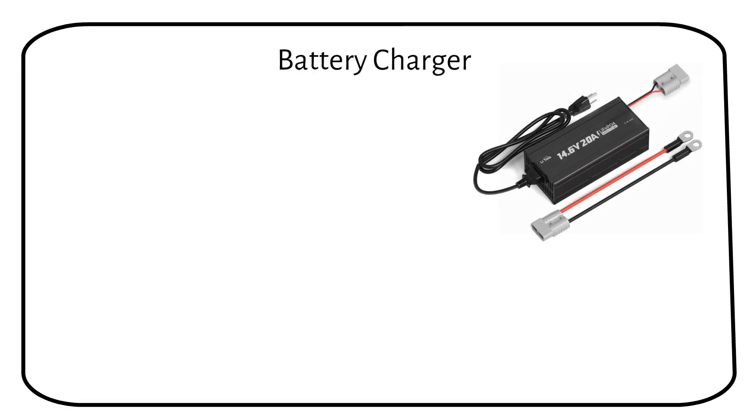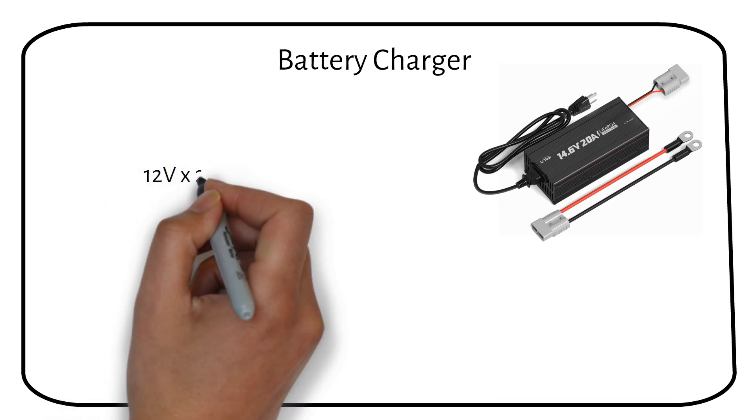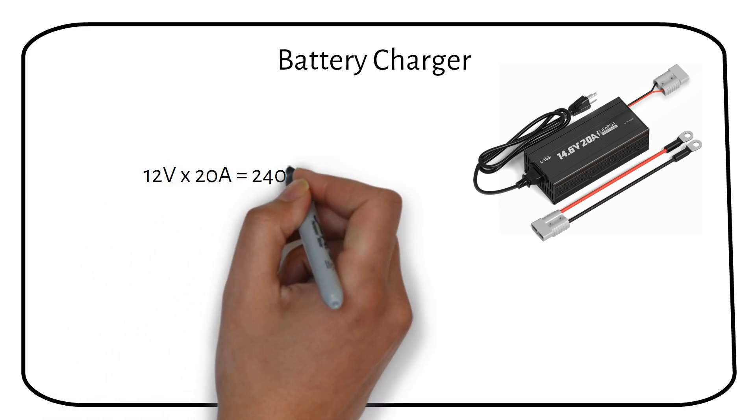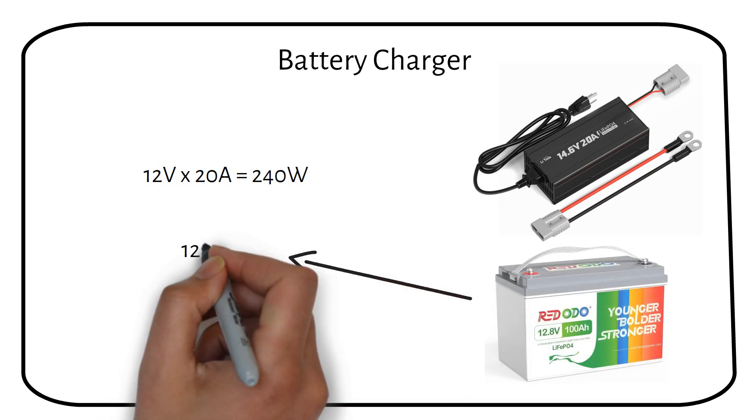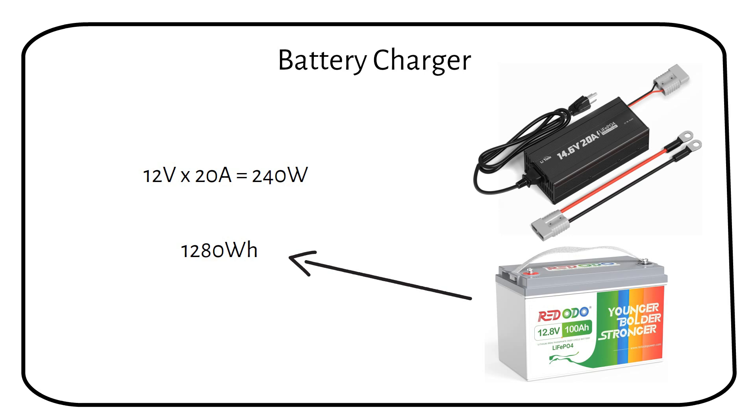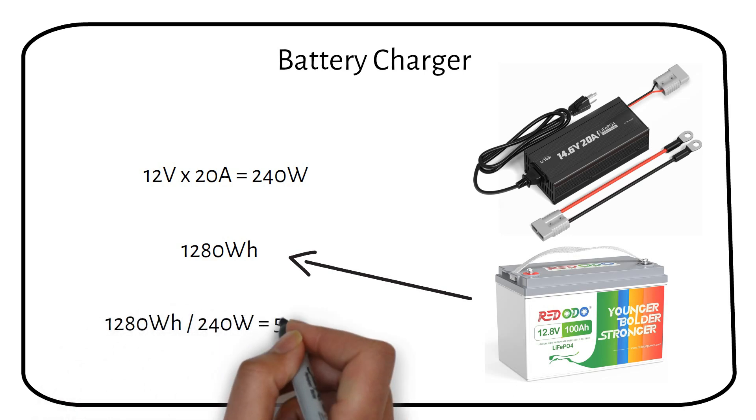If you don't have solar panels and only a battery charger, here's how to calculate the charging time. I have left out efficiency factors for simplicity. A 12 volt 20 amp lithium battery charger delivers 240 watts. A 12 volt 100 amp hour lithium battery has an energy capacity of 1280 watt hours. If we divide them with each other, we get 5.3 hours or 5 hours and 20 minutes.